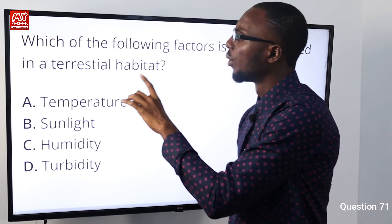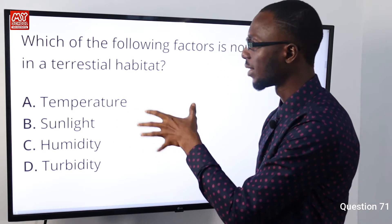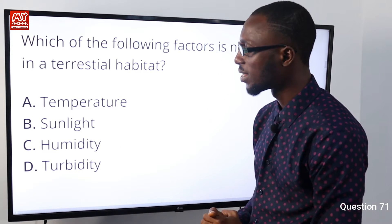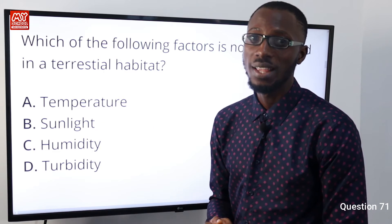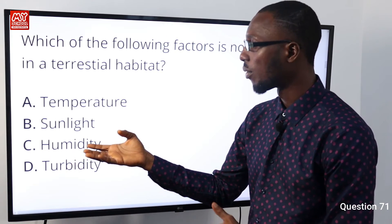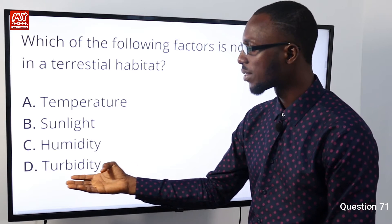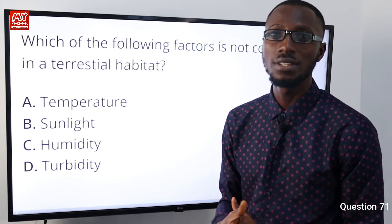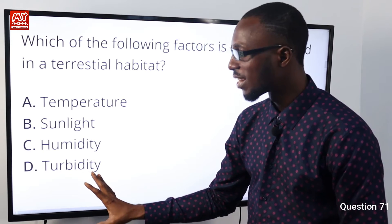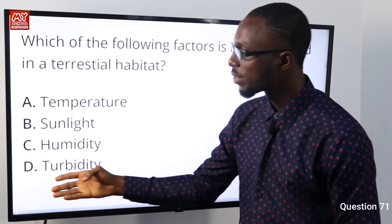Question 71: Which of the following factors is not considered in a terrestrial habitat? Temperature is very important in a terrestrial habitat. Sunlight is used by plants as a source of energy to generate food, and by cold-blooded animals like reptiles to regulate body temperature. Humidity refers to the moisture content of a particular surrounding. Turbidity refers to the degree of clarity of a liquid, particularly a water body. Turbidity is not one of the factors considered in a terrestrial habitat, making option D correct.